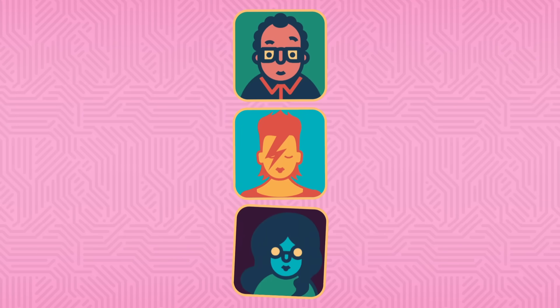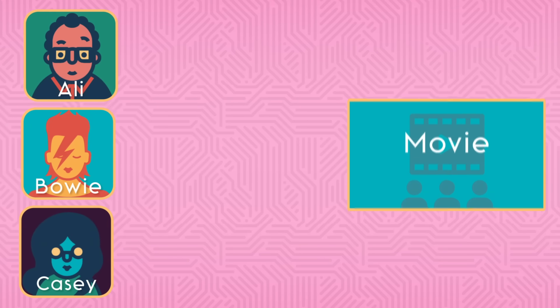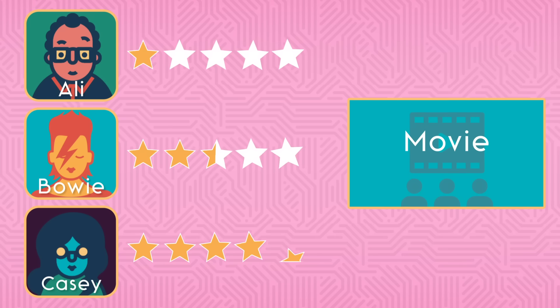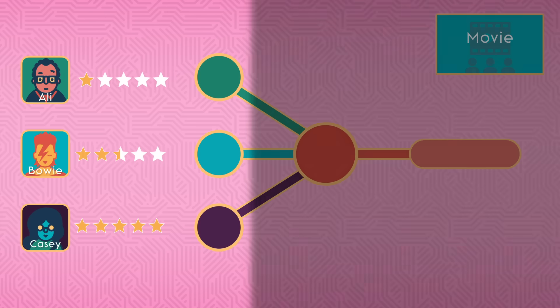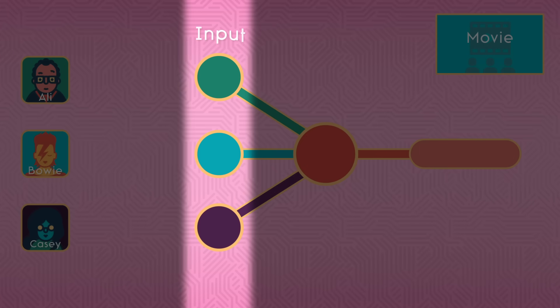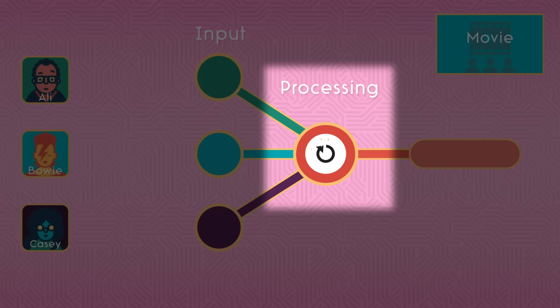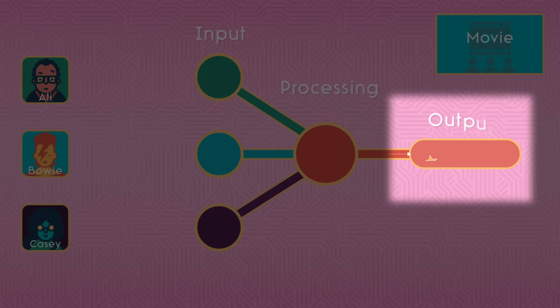To see how a neuron works, let's build a movie recommendation system that uses critics' reviews to guess how much you'll like a movie. Then we'll use your feedback to make the system better. Here are three movie critics, Ali, Bowie, and Casey. Each one rates a movie anywhere from 1 to 5 stars. Now let's build a single artificial neuron. Each of the critics' ratings enters on this side as input. Some calculations are done in here, and we get a single output. In this case, it's a movie rating.